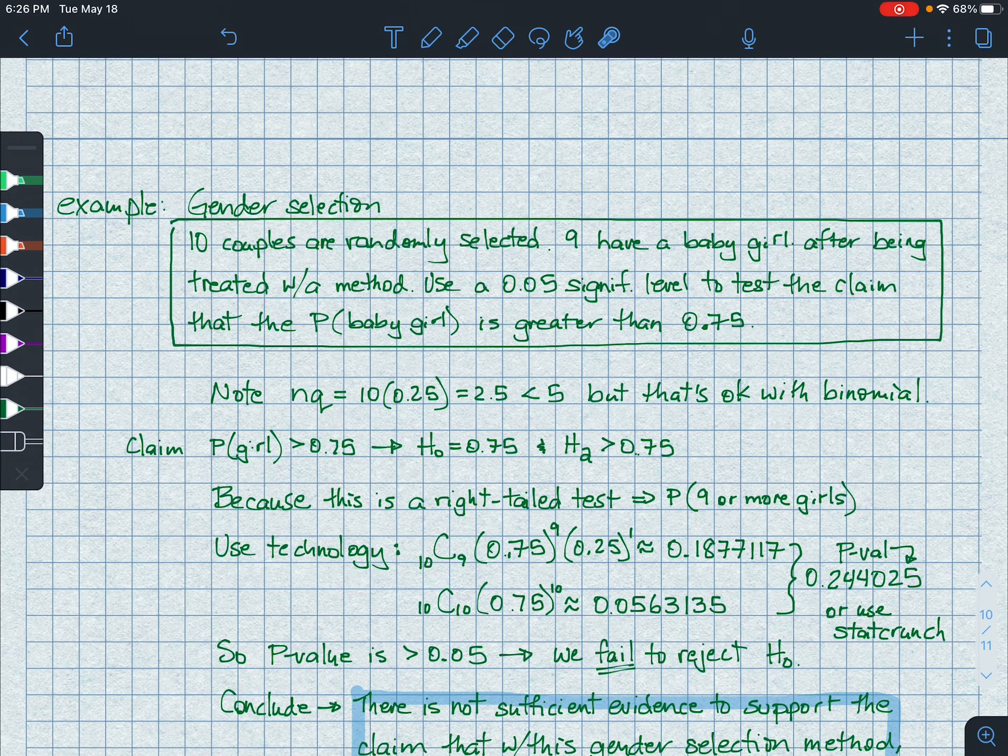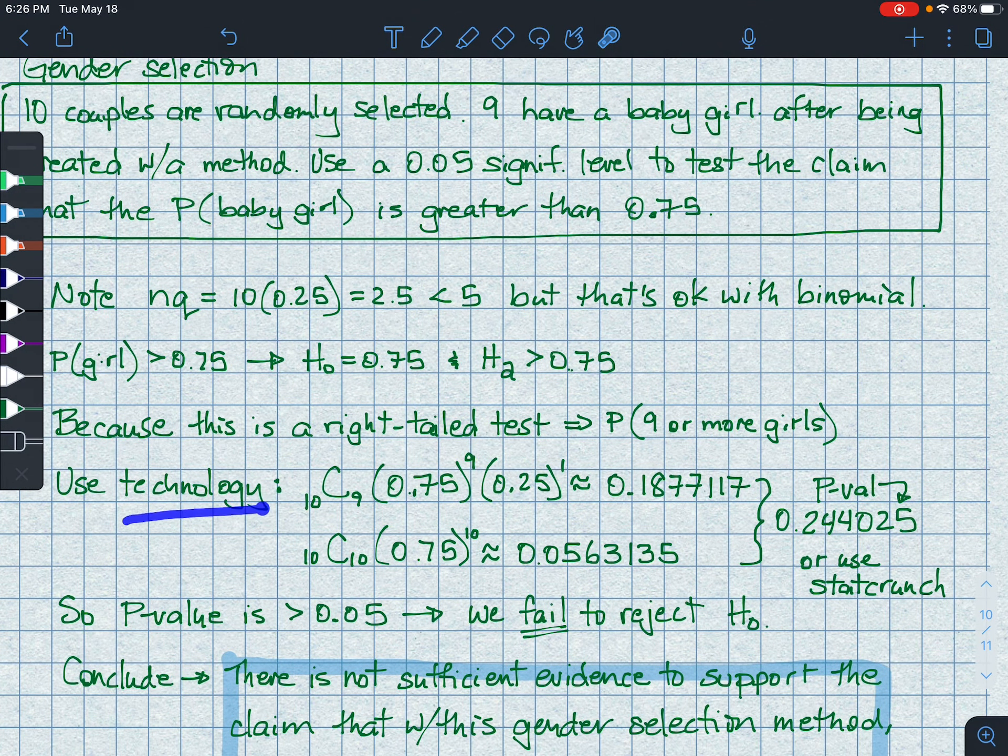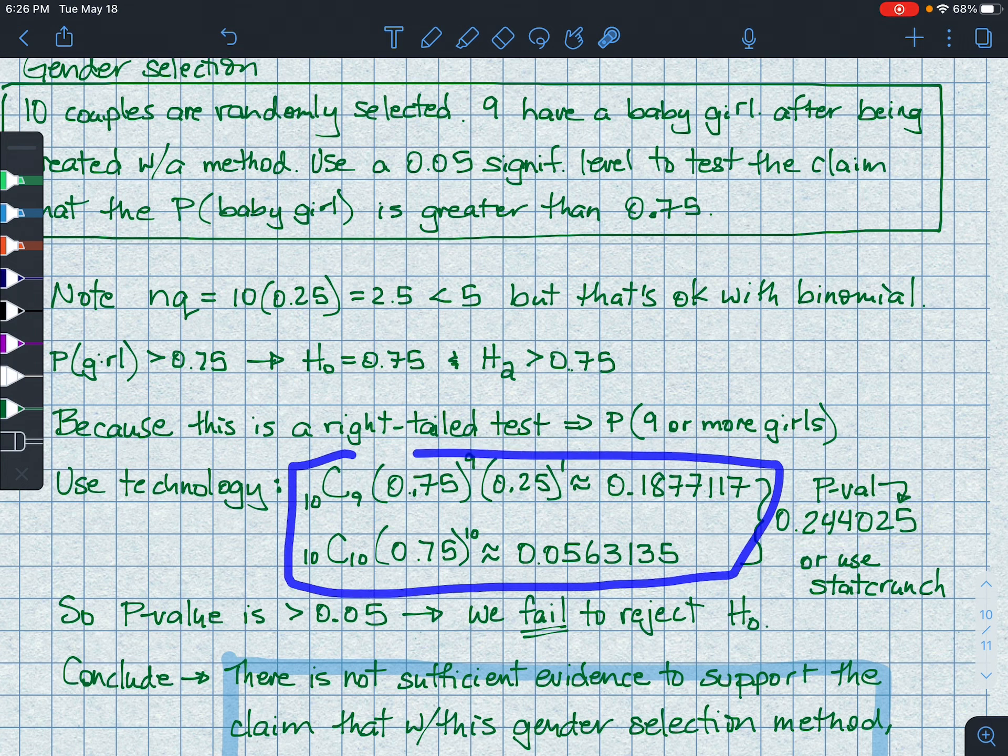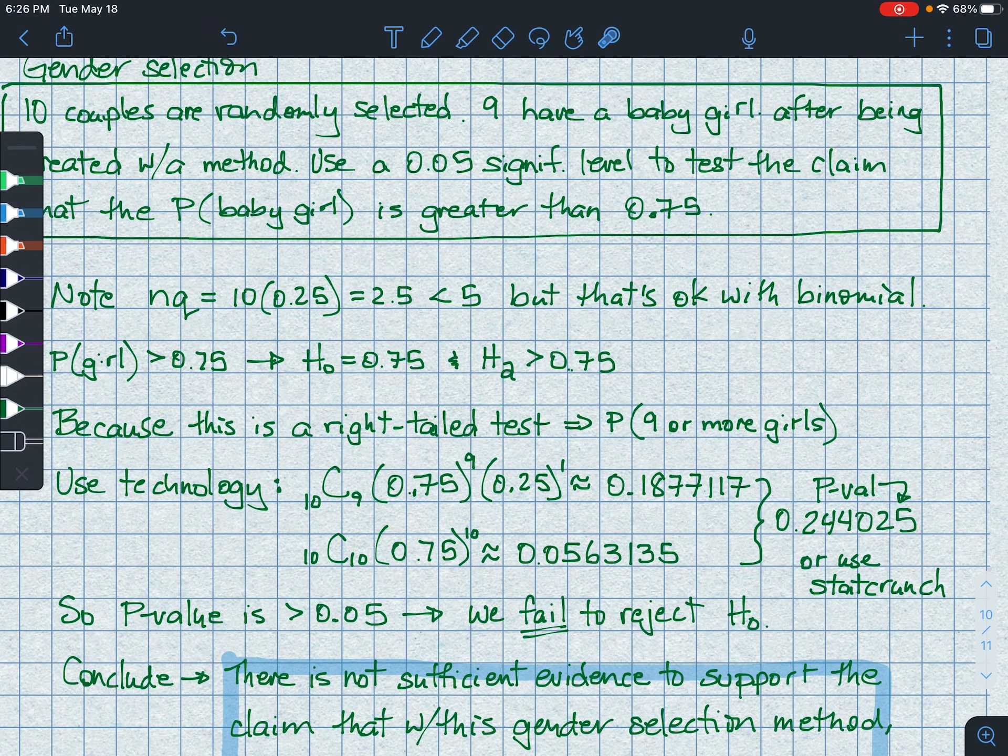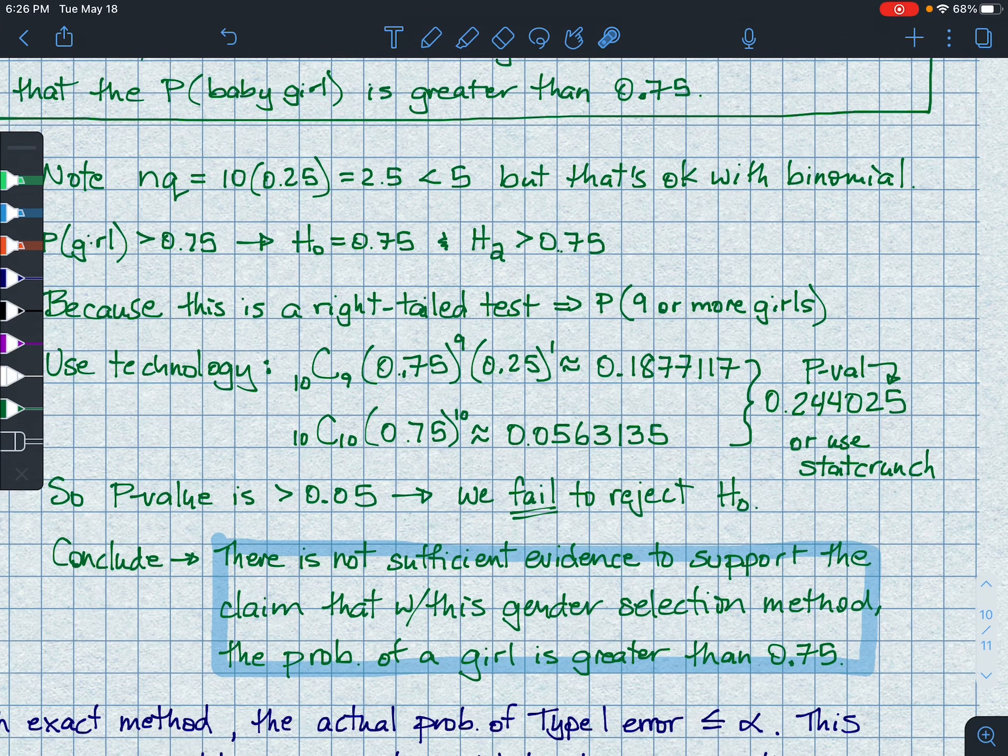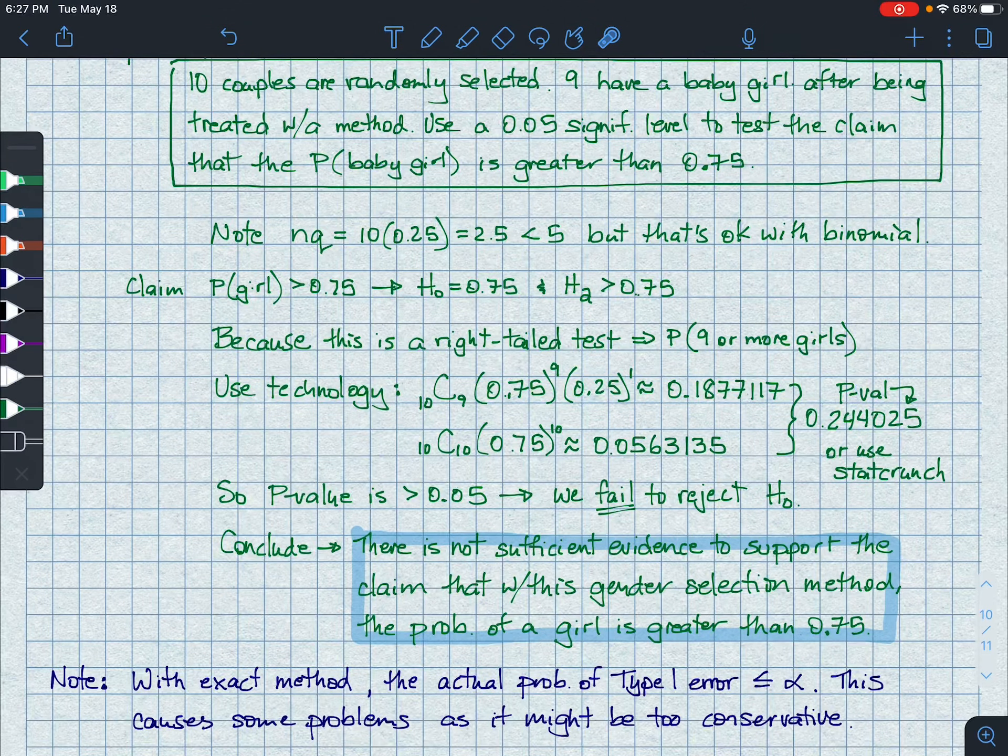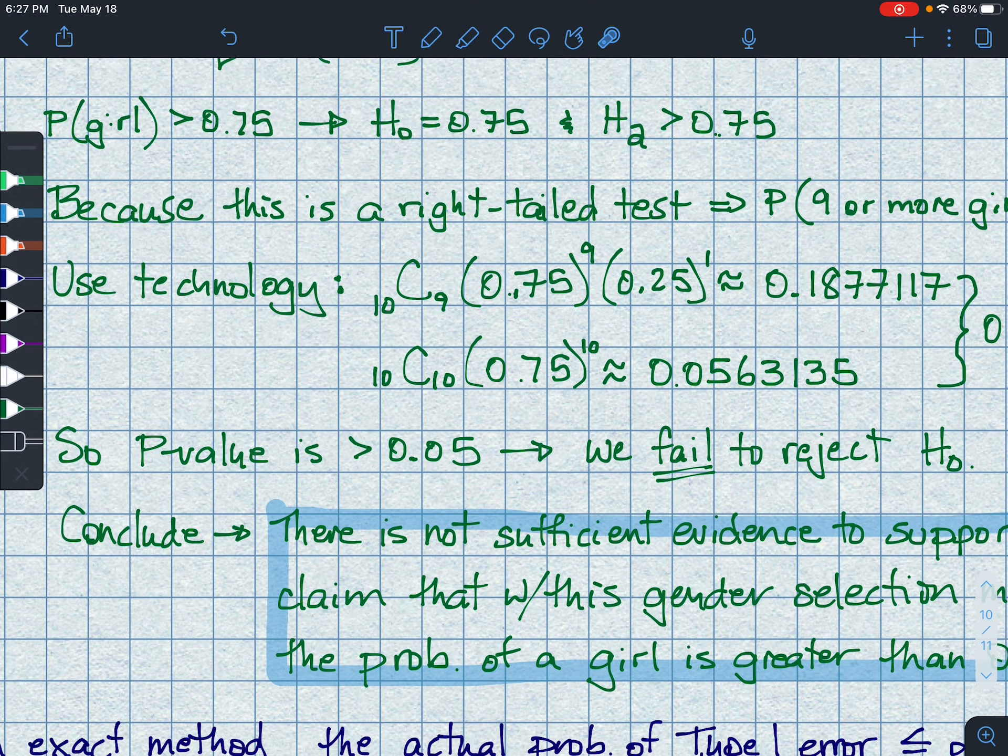Because this is a right tail test, we want to find nine or more girls. So we go to our technology. And I did it by hand, but you certainly can get these values from StatCrunch. Just grab the calculator, the binomial calculator, plug in your values, and then choose nine or more. And you will get this 0.244025. Or, like me, go old school, figure them both out, add them up. All right. In this case, notice our value, 0.244, is greater than our significance level, sorry. Therefore, we fail to reject H sub 0.